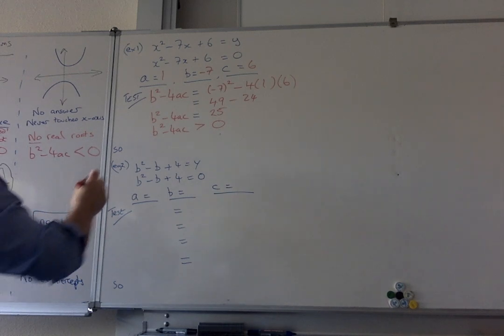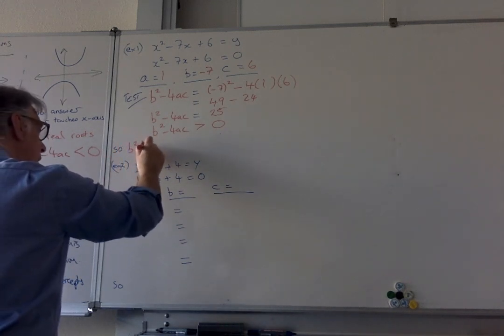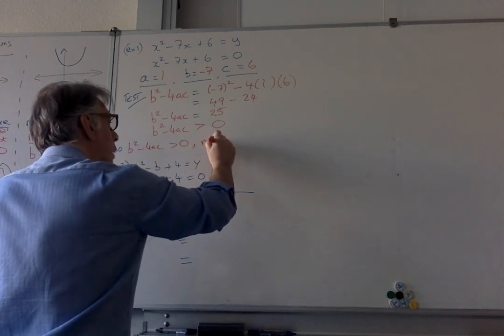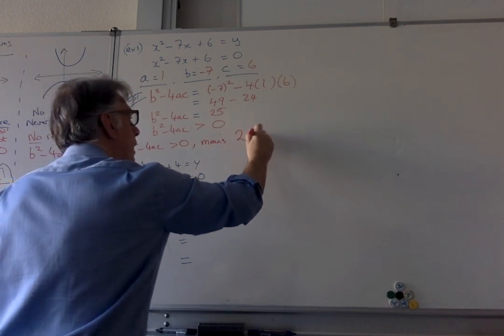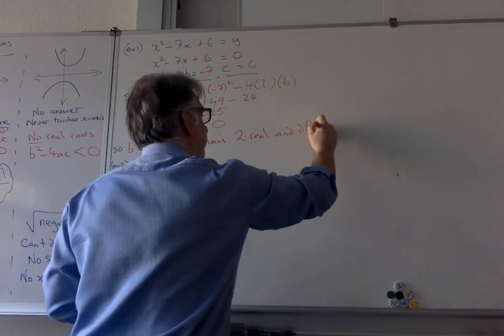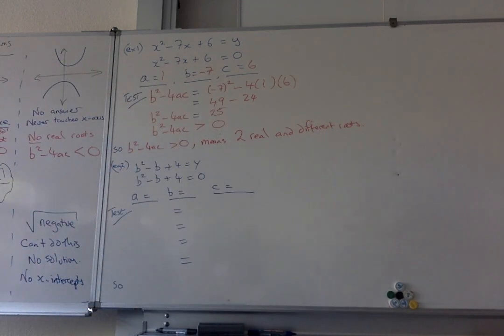Absolutely. That you have got, so b squared minus 4ac is greater than zero. Means that you have two real and different roots. And that's all you need to know. So now you know that if you drew a graph, it's going to cut the x-axis twice. And the two numbers it cuts out are different.